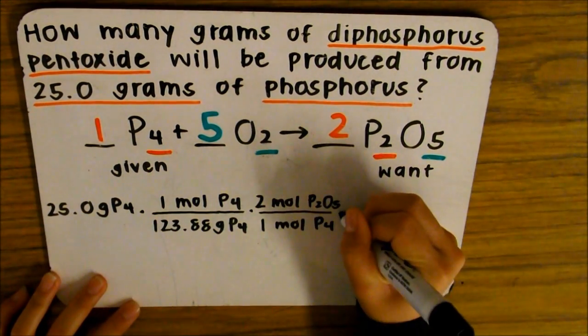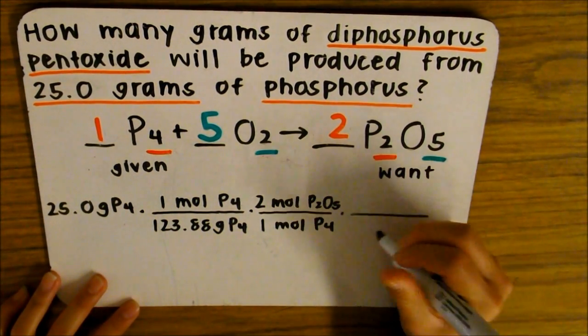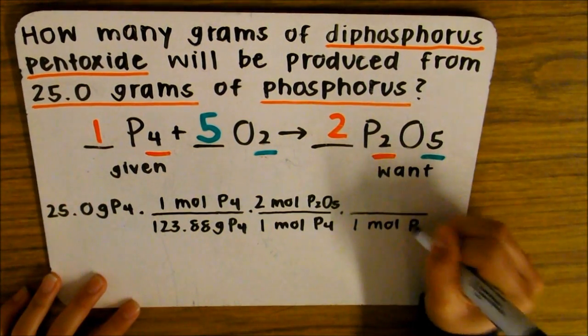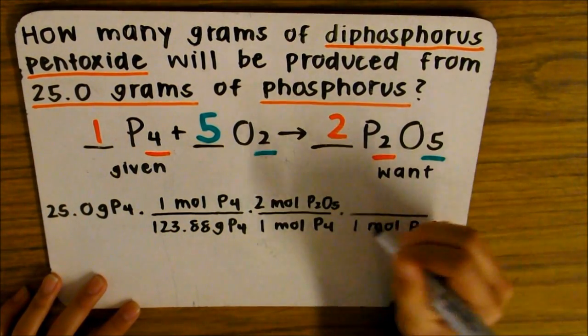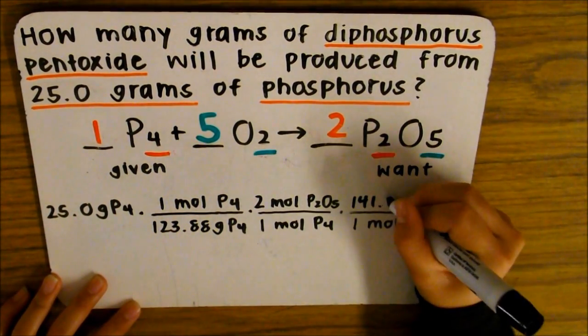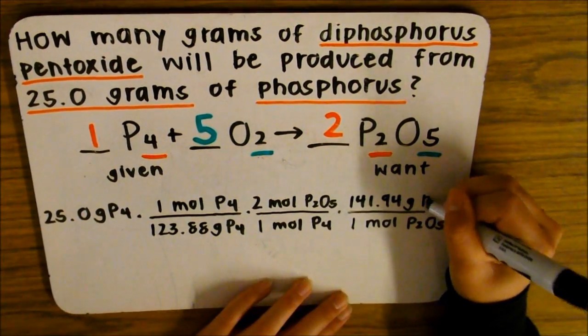Now we're going to write on the bottom one mole, and because we want it in grams, on the top will be the total mass of diphosphorus pentoxide, 141.94 grams.